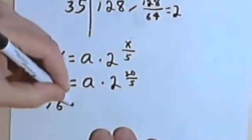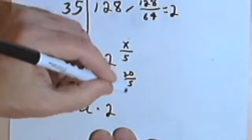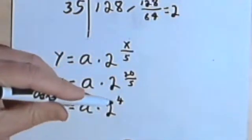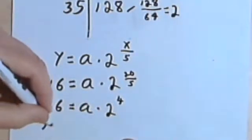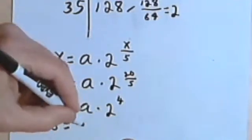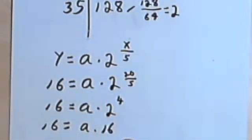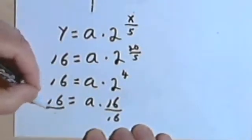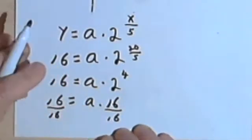So let's see, when y is 16, I'm gonna have a times 2 to the x is 20, 20 over delta x is 5. That means I'll have 16 equals a times 2, 20 over 5 is 4. And 2 to the 4th is 16, 2, 4, 8, 16. So 16 equals a times 16. Oh, so that should mean if I divide both sides by 16, a should just equal 1. That's nice, that can happen.